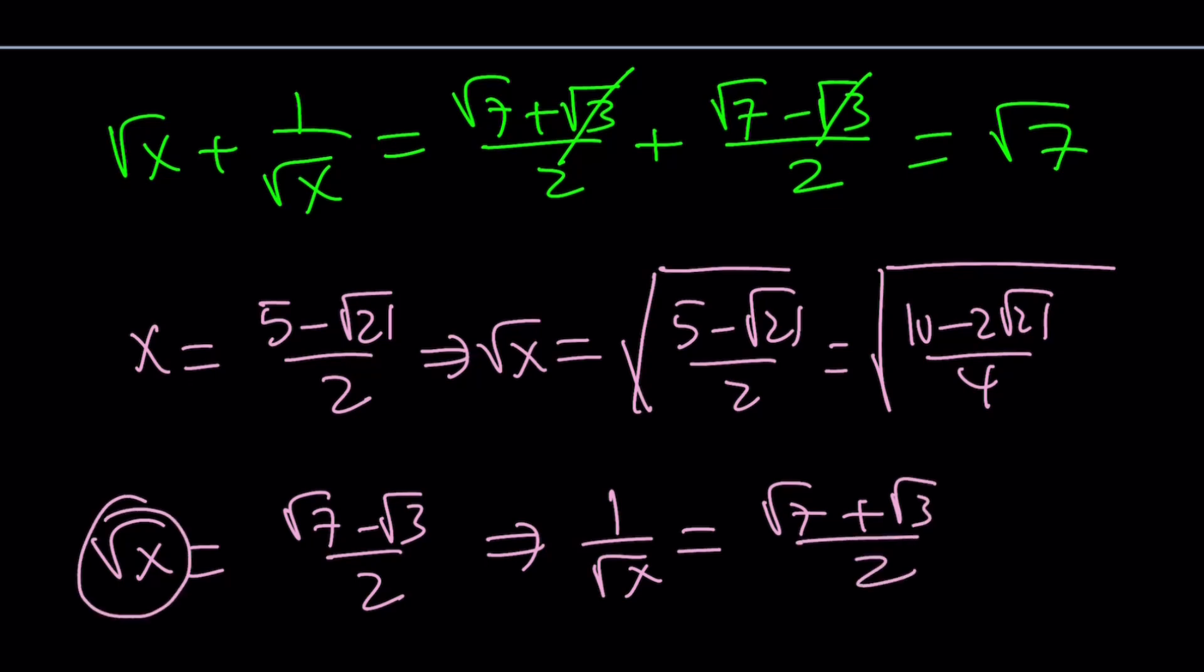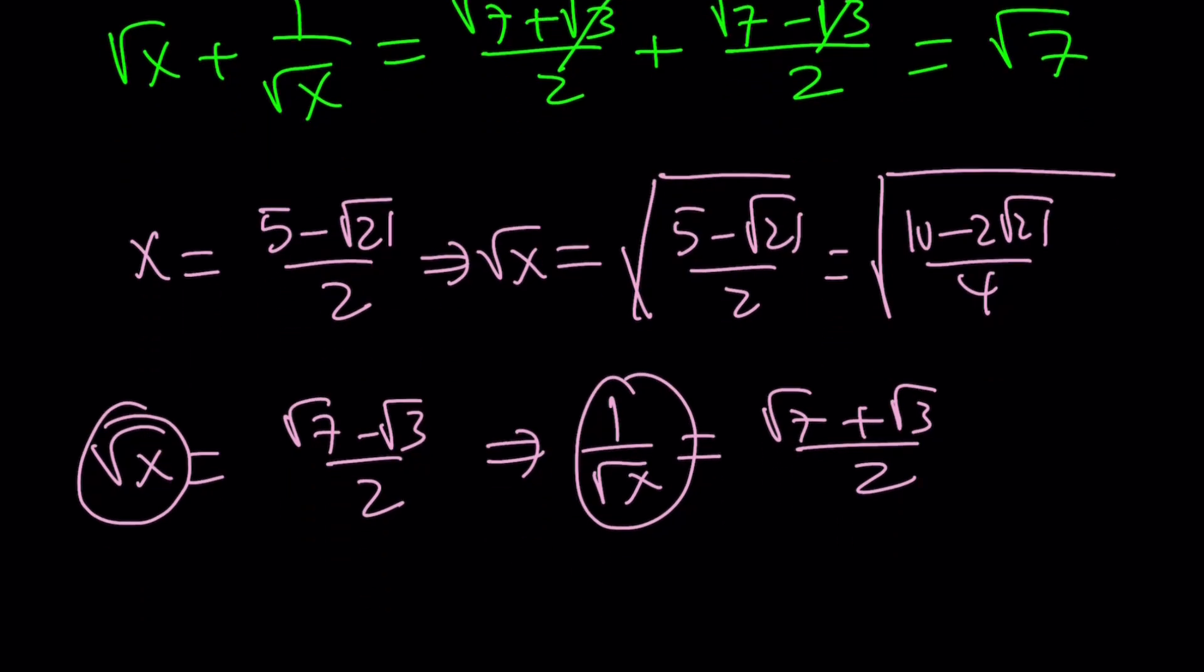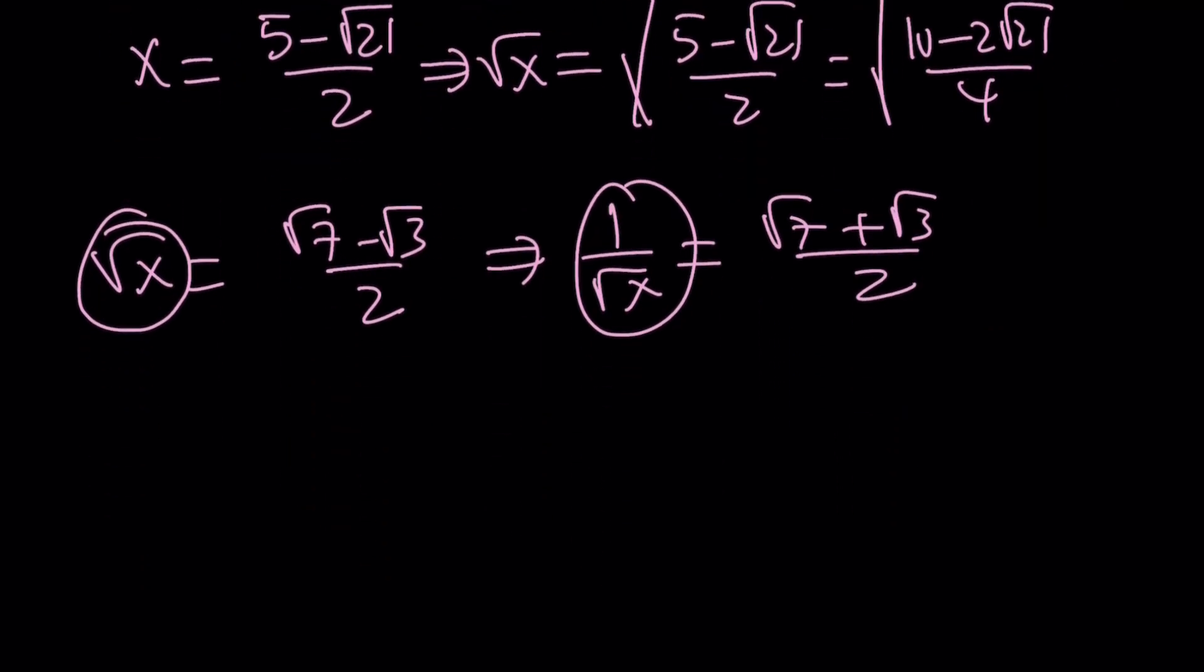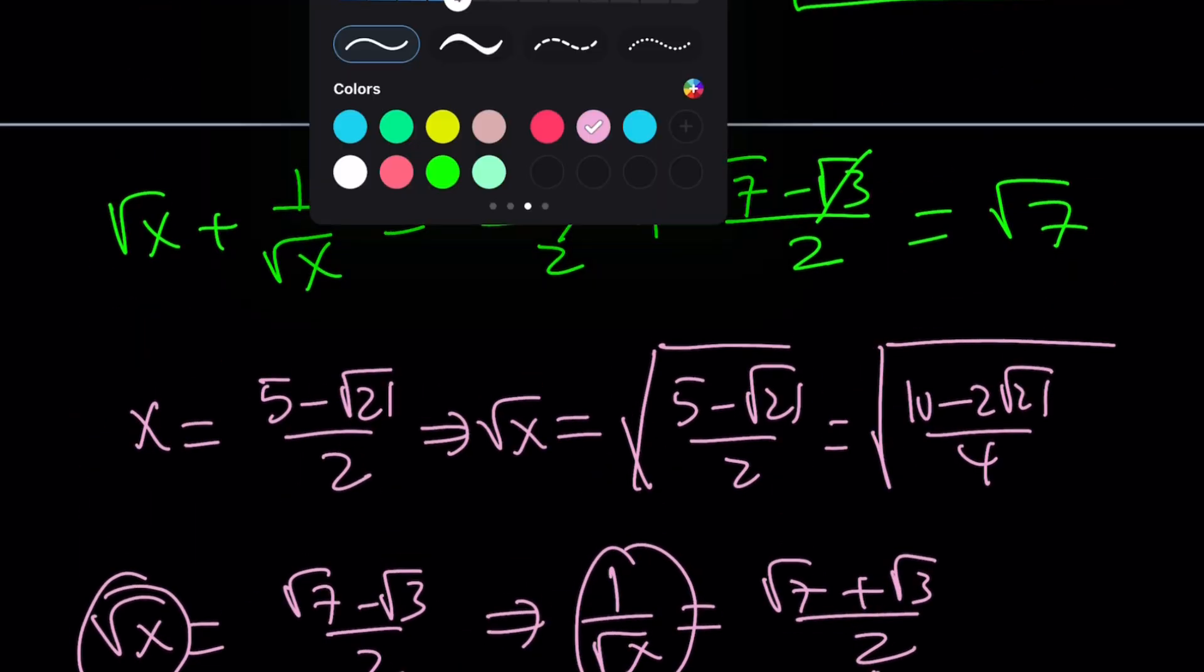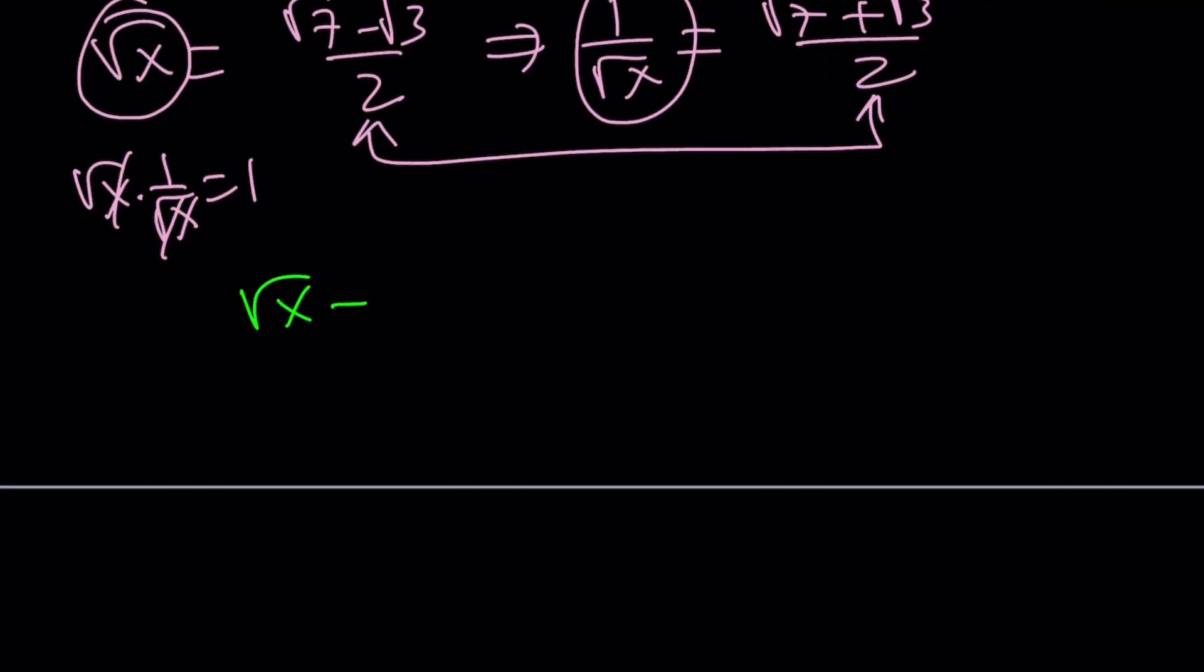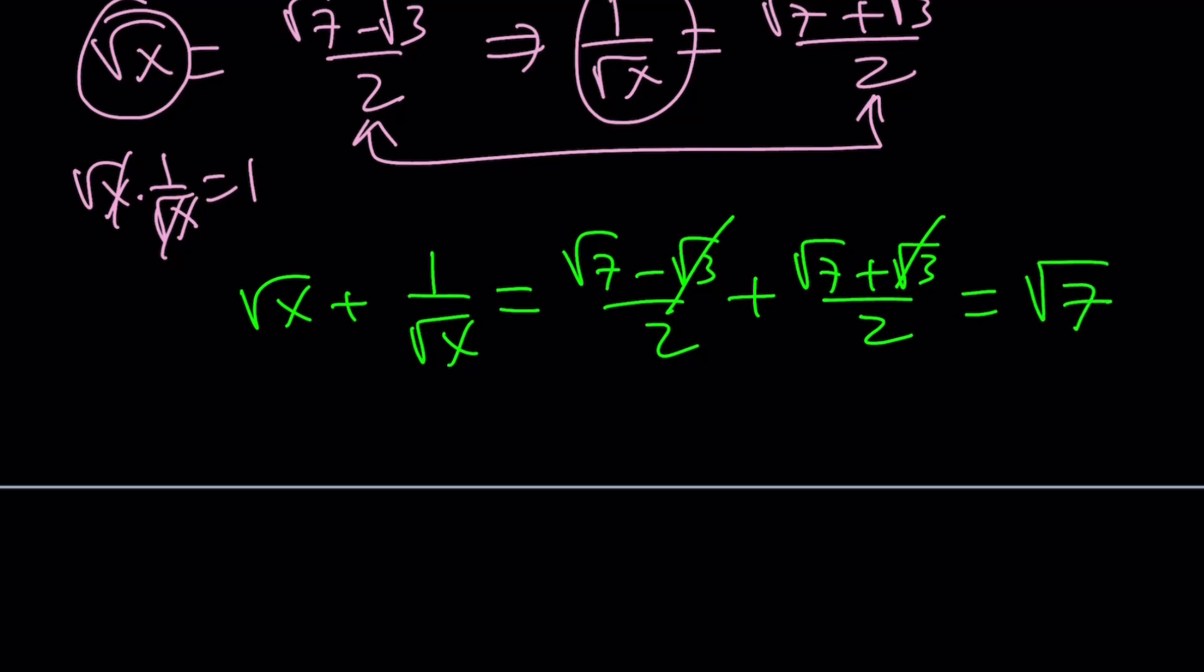Notice that these are just switching roles when we use the different roots, but they're always reciprocals. In other words, if you multiply these two numbers, the product is 1. And that kind of makes sense, because root x times 1 over root x is always 1. But that's not what we need. We do need to find root x plus 1 over root x. You're going to get the exact same thing, because they just switch around, but you get the same thing. Root 7 minus root 3 over 2 plus root 7 plus root 3 over 2. The order changes, but that doesn't change anything. And you still get root 7 for square root of x plus 1 over square root of x.